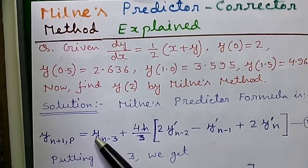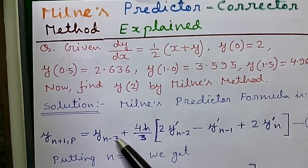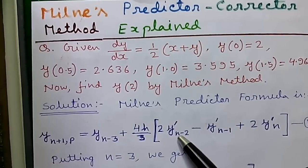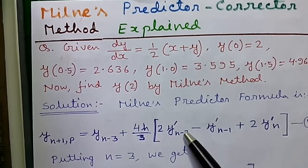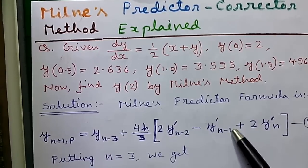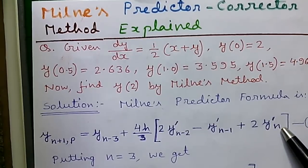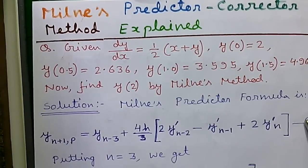So Milne's predictor formula is given by y(n+1,p), where p stands for predictor formula, equals y(n-3) plus 4h/3 times [2y'(n-2) minus y'(n-1) plus 2y'(n)]. This is our formula number 1.